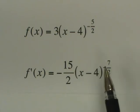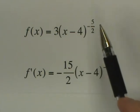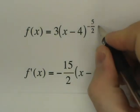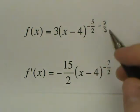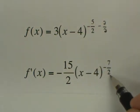x minus 4 raised to, now you have to subtract 1 from this. When you subtract 1 from it, you'll put it in the form of 2 over 2, and so this becomes negative 7 halves.